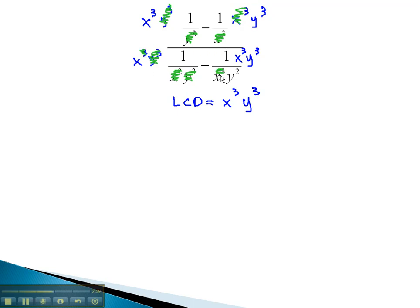Similarly, on the right side, the x cubed divide out completely, and the y squared divides two of the y's out, leaving one behind.